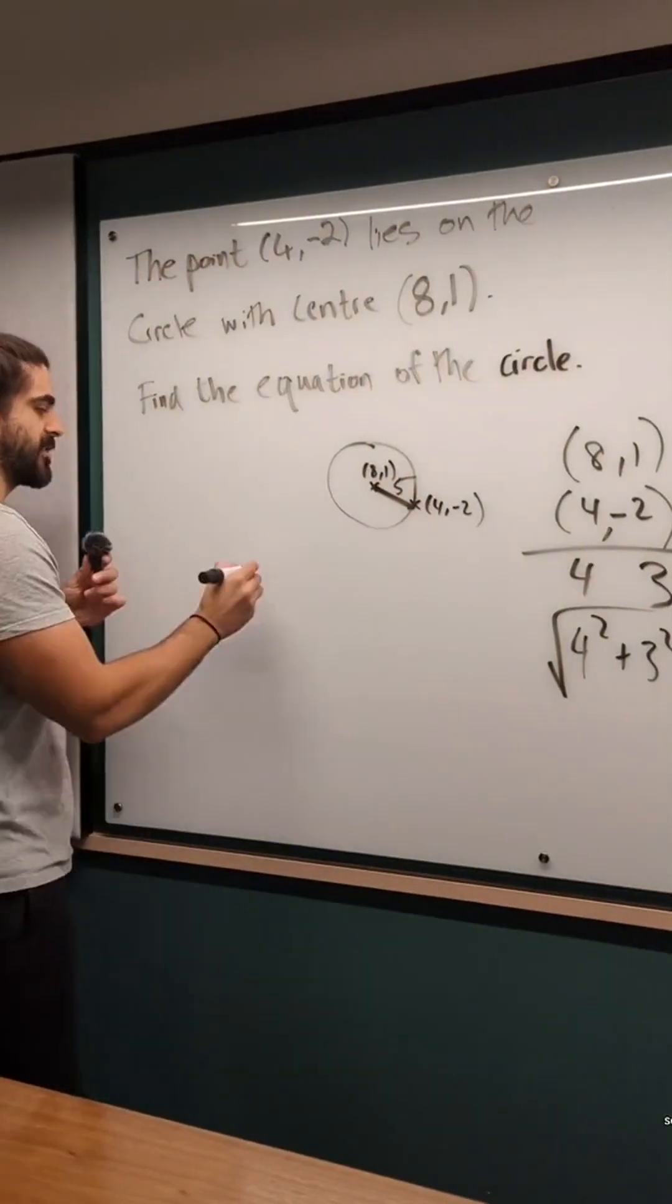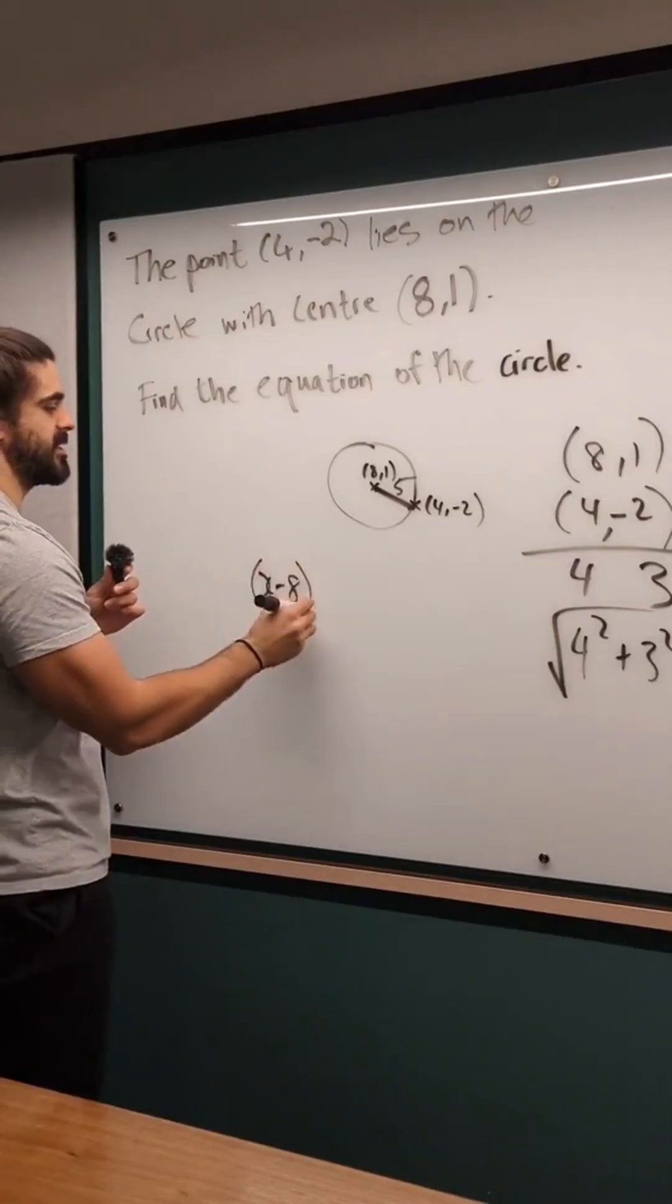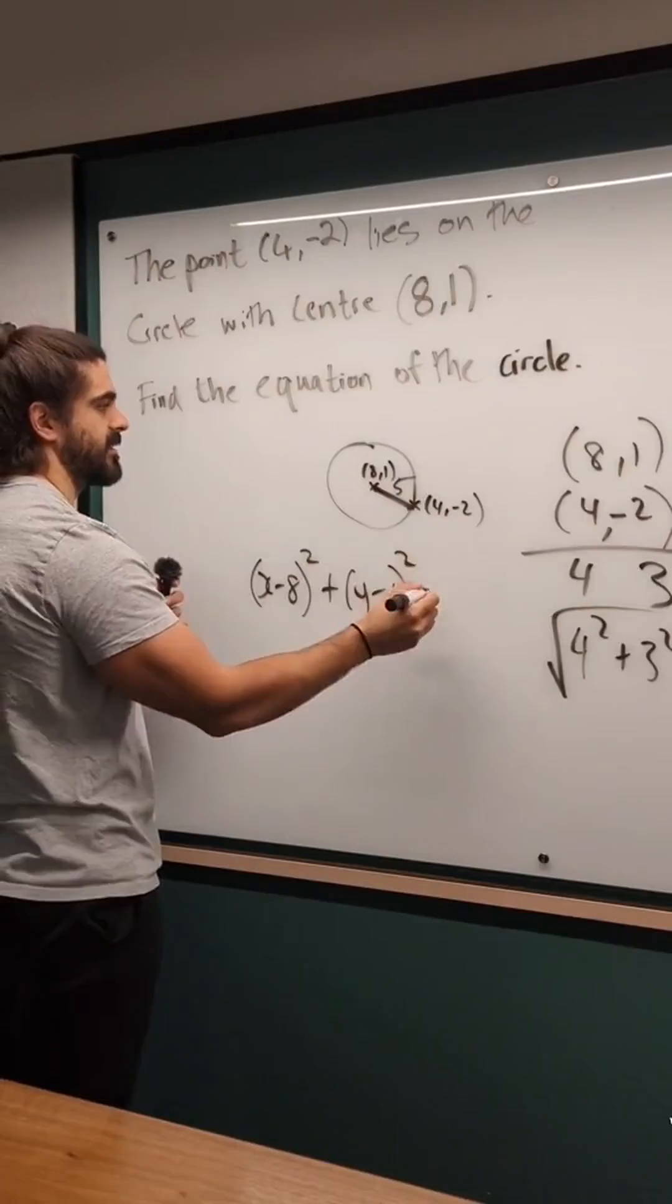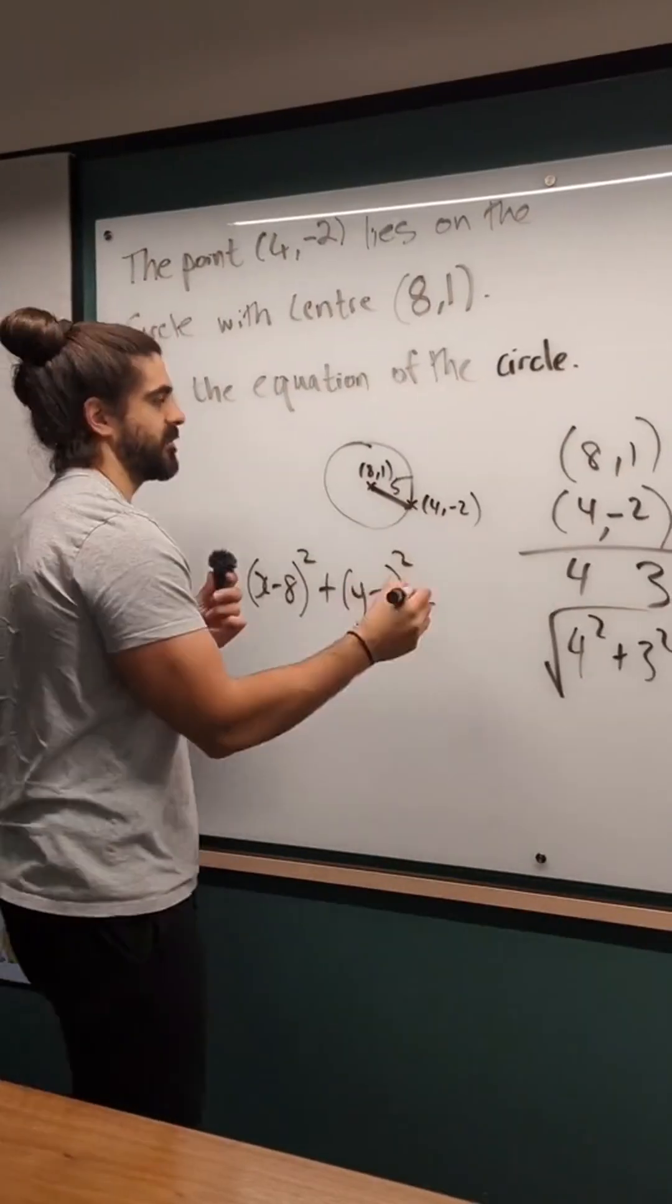So, the equation of my circle, x minus 8 squared, y minus 1 squared. I'm looking at the center of the circle. And it's 5 squared.